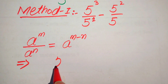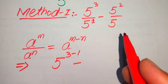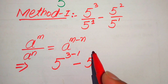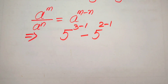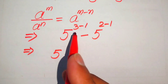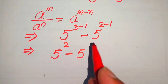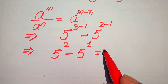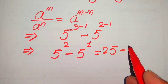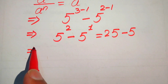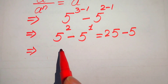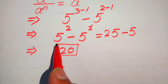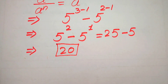We get 5 to the power of 3 minus 1, minus 5 to the power of 2 minus 1. In the next step, 3 minus 1 becomes 2 and 2 minus 1 becomes 1. So 5 squared equals 25, and 5 to the power of 1 equals 5. We get 25 minus 5, which equals 20. This is our final simplified form from the first method.